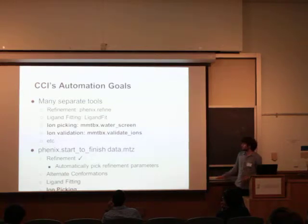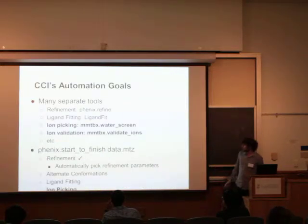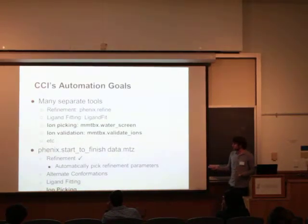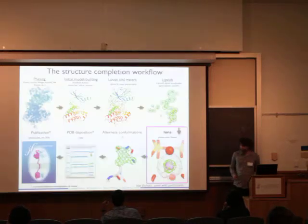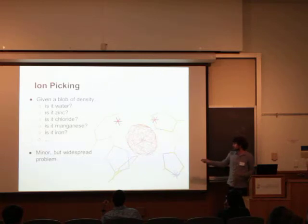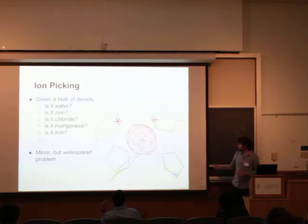Our lab has one big project called Phenix Refine, which covers this step here, as well as a few other things trying to make this process of going from data to model completely automated. I've been working on two tools — ion picking and ion validation — with the end goal of being able to run one command, start to finish on a data file, and generate a model. Ion picking is the process of looking at one of the blobs in the map and being able to figure out what is its identity: is it water? Is it zinc? Is it chloride? Is it manganese?